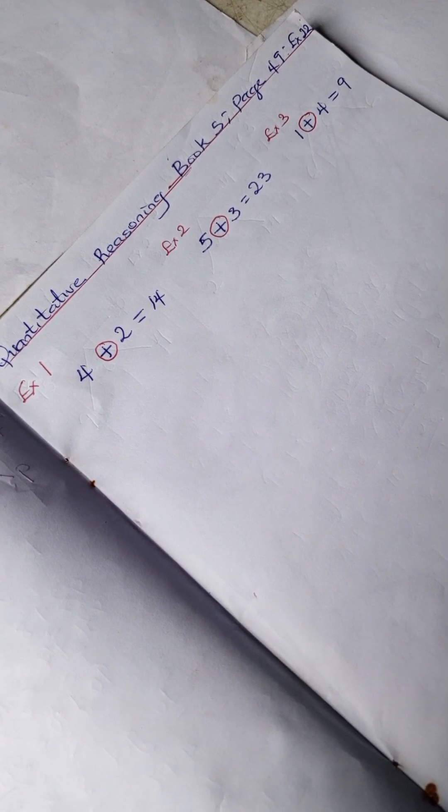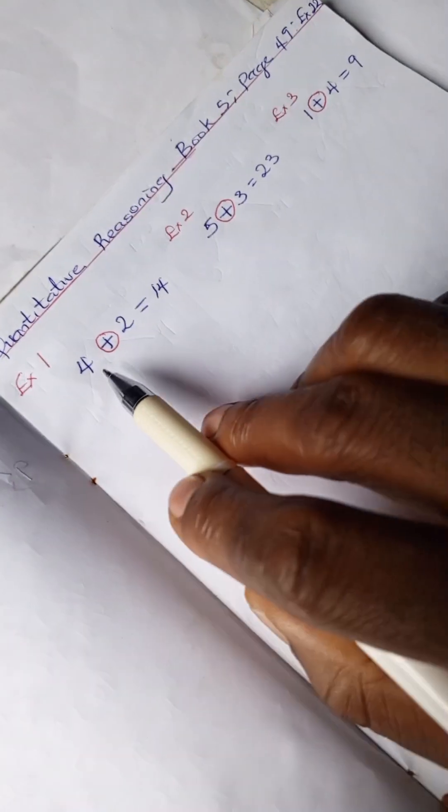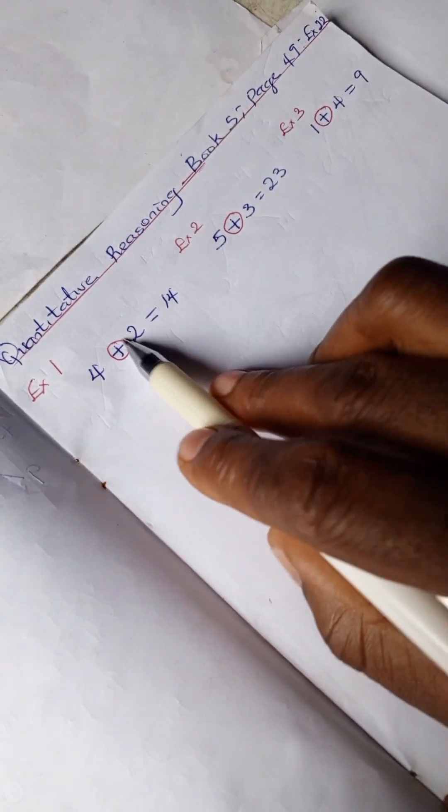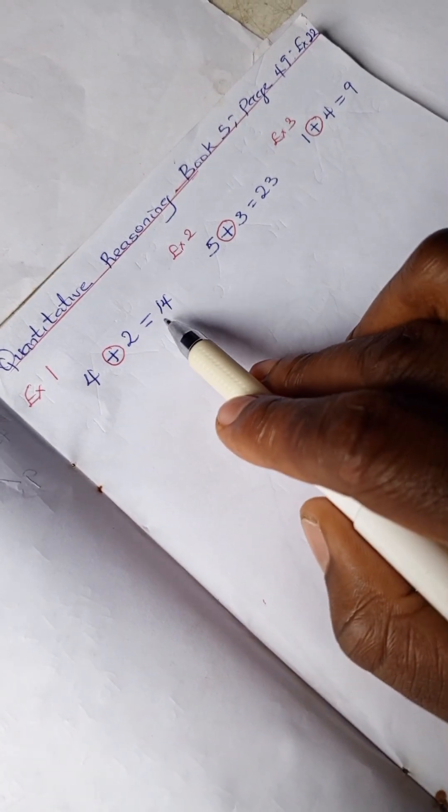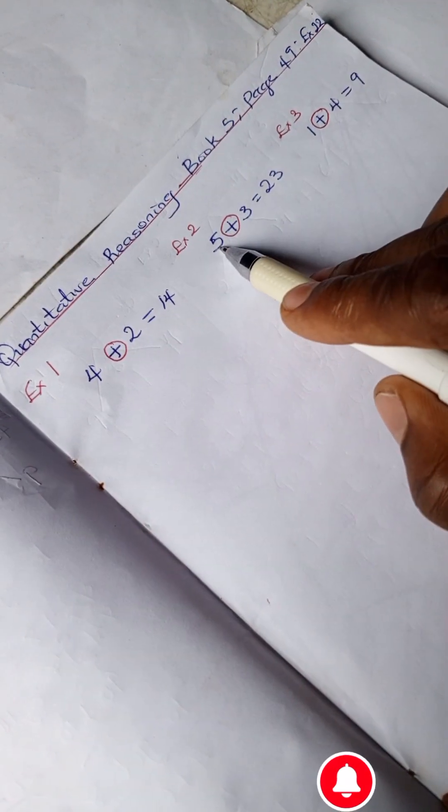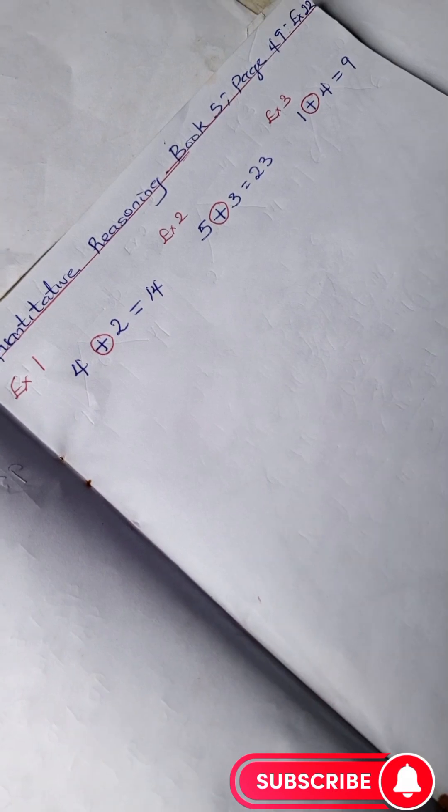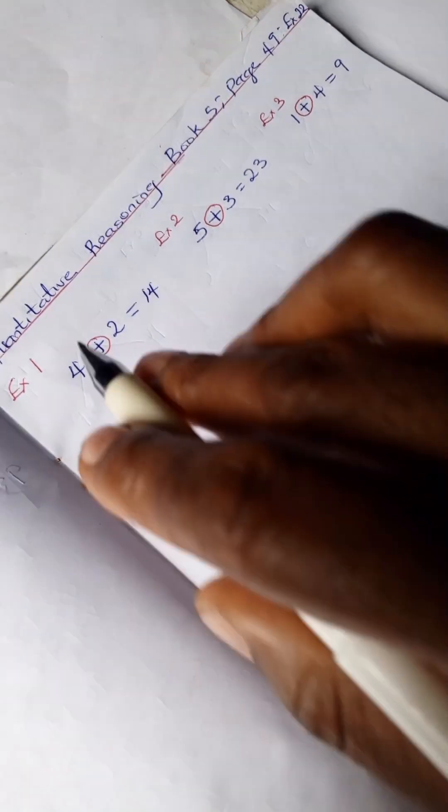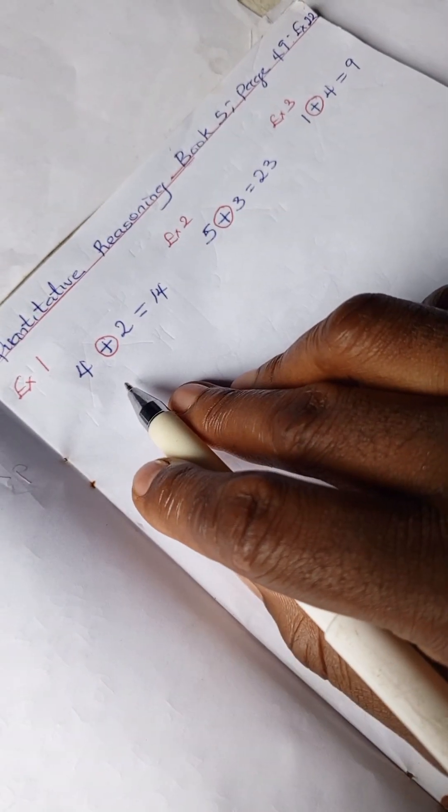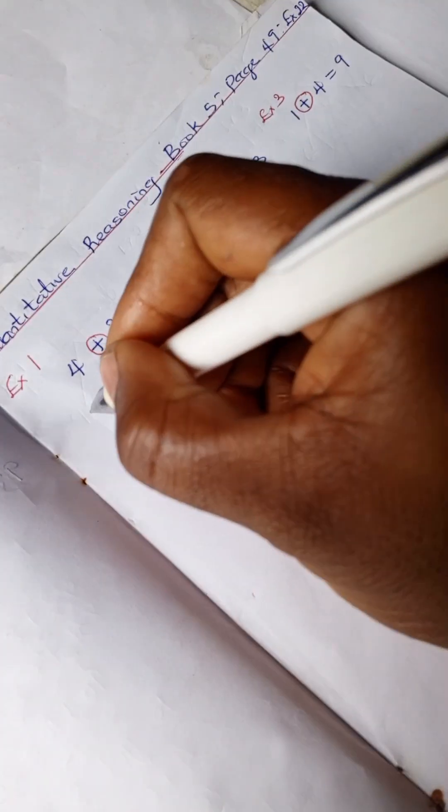We have this problem to solve: 4 ⊕ 2 = 14. In this example, we have 5 ⊕ 3 = 23. We're going to find 14.